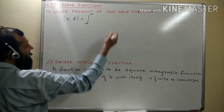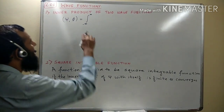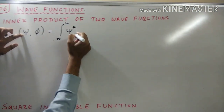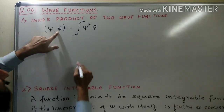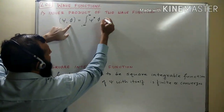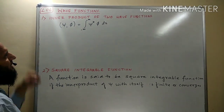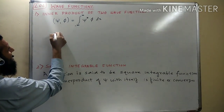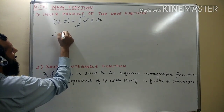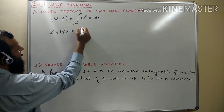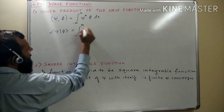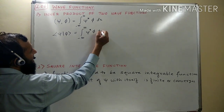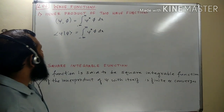The inner product between psi and phi is defined as the integral over the complete range of x. We take the complex conjugate of the first vector and keep the second vector as it is. So the inner product is the integral of psi-star times phi dx. In Dirac notation, bra-psi ket-phi equals the integral over the complete range of psi-star phi dx. This is the method of finding the inner product of two wave functions.